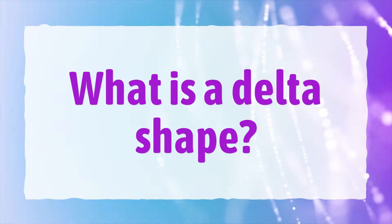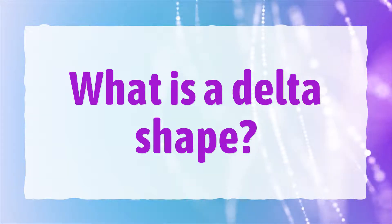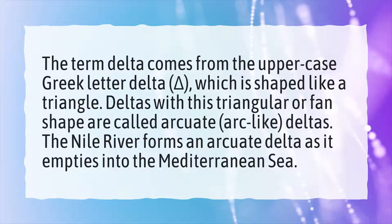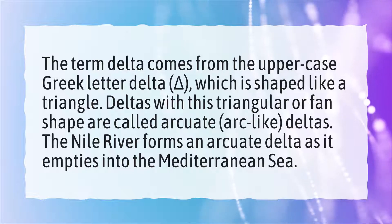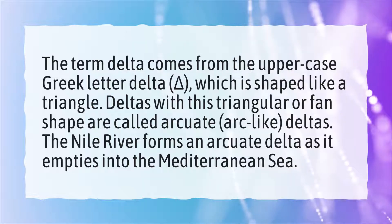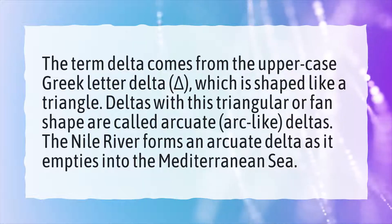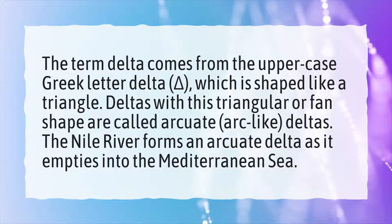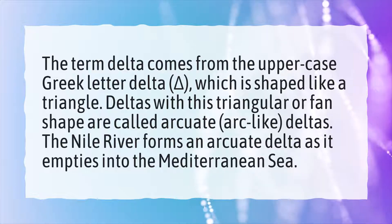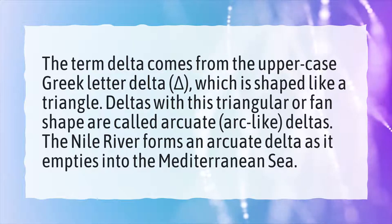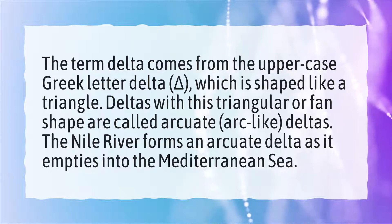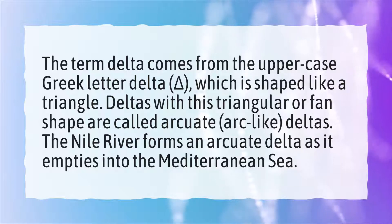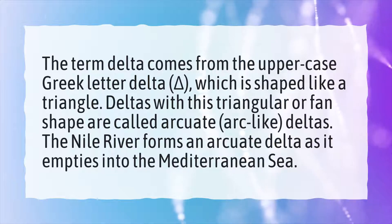What is a delta shape? The term delta comes from the uppercase Greek letter delta, which is shaped like a triangle. Deltas with this triangular or fan shape are called arcuate, arc-like deltas. The Nile River forms an arcuate delta as it empties into the Mediterranean Sea.